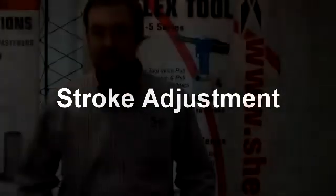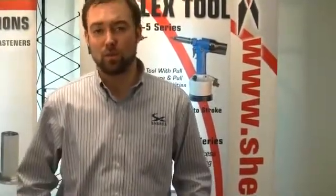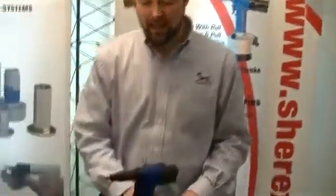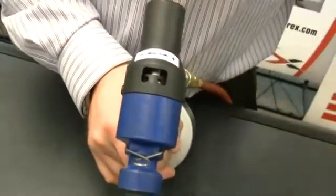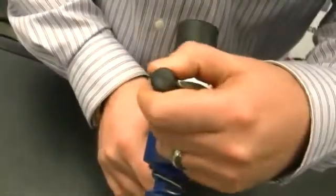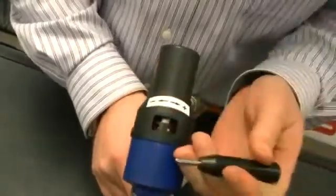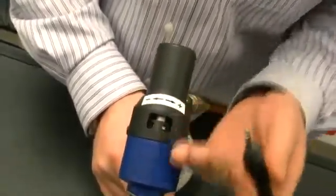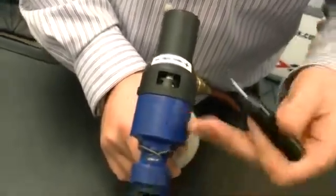Now that we have the proper thread size on the nosepiece installed onto the tool, we will next adjust the stroke distance, the pulling distance of the tool for the application. As you can see on the Flex 5S, we have a cutout window on the top of the tool exposing a stop block. To adjust the stroke of the tool, you move the stop block either to the left to increase the stroke, or to the right to reduce the stroke. What we are doing is moving the stop block in and out, changing the stroke length of the air motor in the tool.